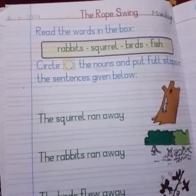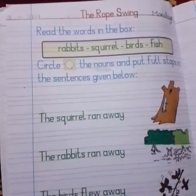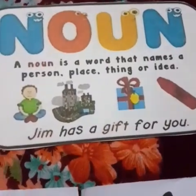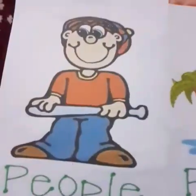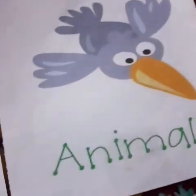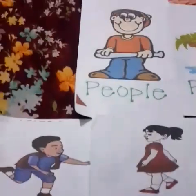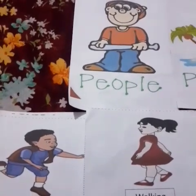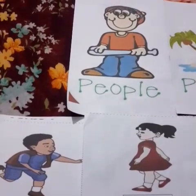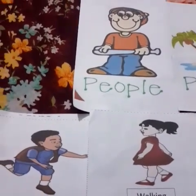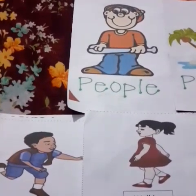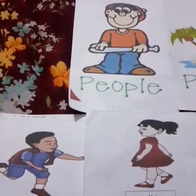First of all, who can tell me what is a noun? Nouns are words that are the name of a person, place, things, and animals. For example, girl and boy are words that name people, and doctor, nurse, mom, dad — we are all persons, so these are nouns.